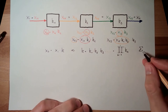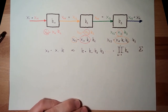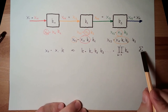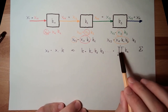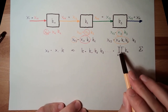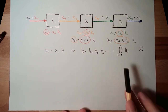I hope you know this sign — the big sigma is the sum, and the big pi is the product. So the product of all k's — k1 multiplied by k2 multiplied by k3 by k4 and so on — this will be the total factor. That's it for a chain.